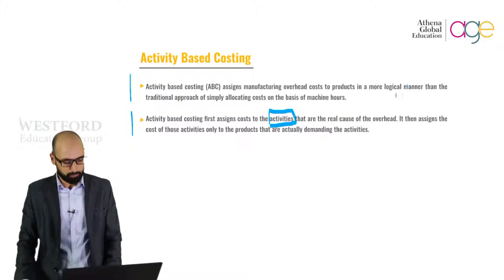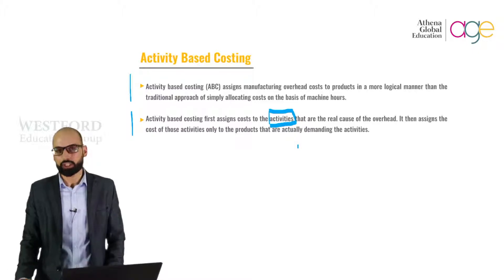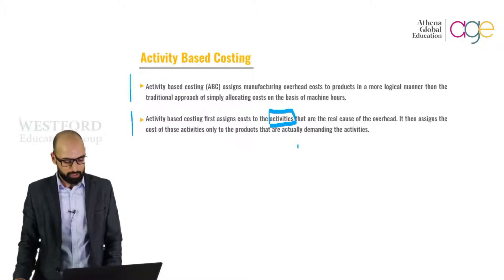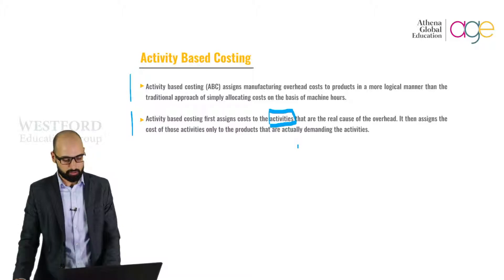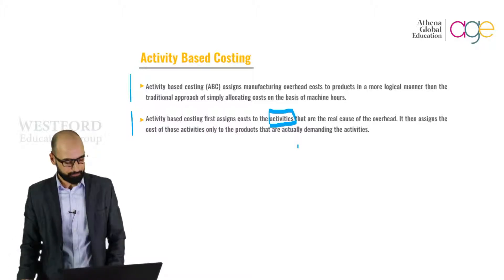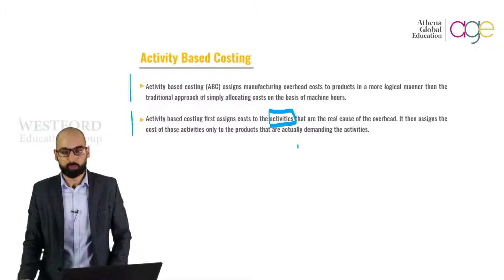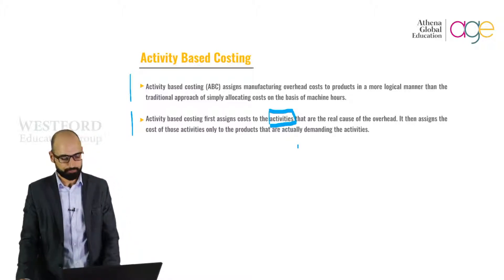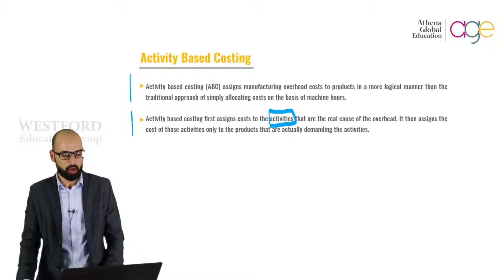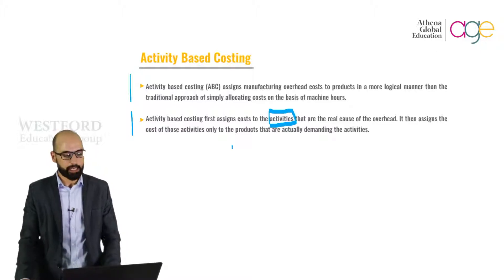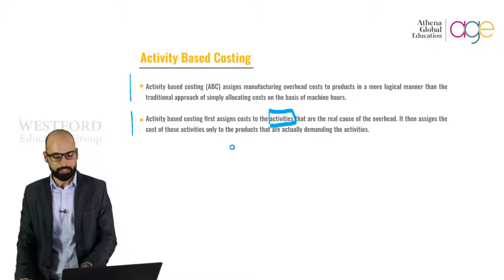A cost driver, also known as an activity driver, is used to refer to an allocation base. Examples of cost drivers include machine setups, machine requests, consumed power, purchase orders, quality inspections, or production orders. This is how we define activities in ABC costing.